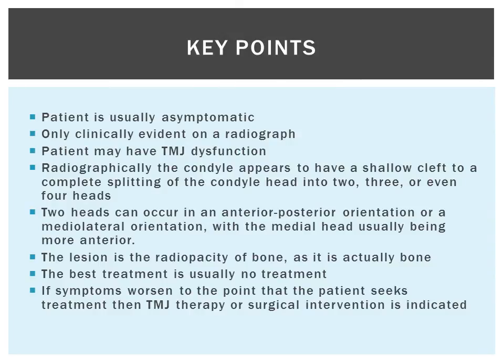The following are the key points of the presentation. With bifed condyle, the patient is usually asymptomatic, causing them no problems, and it is usually only clinically evident on a radiograph. The patient may have TMJ dysfunction. Radiographically, the condyle will appear to have a shallow cleft, and the two heads can occur in the anterior-posterior or medial-lateral orientation. The lesion is the radiopacity of bone because it is bone. The best treatment is usually no treatment; if symptoms worsen, TMJ therapy or surgical intervention would be indicated.